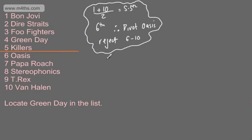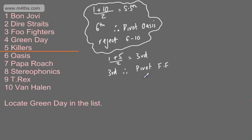Now we've got our new list, which is positions 1 to 5. So we'll do 1 plus 5 divided by 2, which gives me 3. We can see that Foo Fighters are now the central name - the pivot. The pivot is the 3rd, which is Foo Fighters. We've got positions 1 through 5: Bon Jovi (B), Diastrates (D), Foo Fighters (F), Green Day (G), and Killers (K).